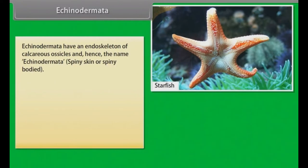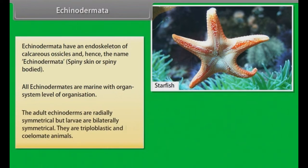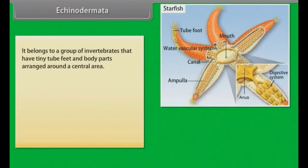Echinodermata. Echinoderms have an endoskeleton of calcareous ossicles, hence the name Echinodermata, which means spiny skin or spiny bodied. All echinodermates are marine with organ system level of organization. The adult echinodermates are radially symmetrical, but larvae are bilaterally symmetrical. They are triploblastic and coelomate animals, belonging to invertebrates with tiny tube feet and body parts arranged around a central area.